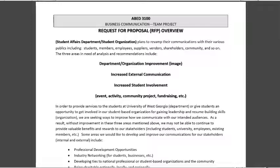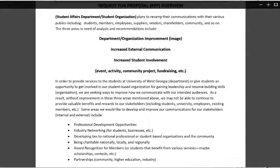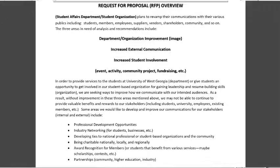The student affairs department or student organization plans to revamp their communications with their various publics, including students, members, employees, suppliers, vendors, shareholders, the community, and so on. The three areas in need of analysis and recommendations include: the department or organization's image or improvement, increased external communication, and increased student involvement — such as activities, events, community projects, and fundraising.